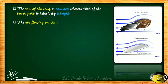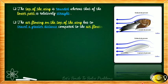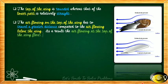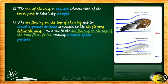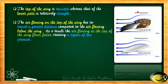The next point is that the air flowing on the top of the wing has to travel a greater distance compared to the air flowing below the wing. As a result, the air flowing at the top of the wing flows faster, creating a region of low pressure. The air has to cross the rounded upper section and travel a greater distance, so above the wing the air pressure is reduced, whereas in the lower portion the air pressure is constant.